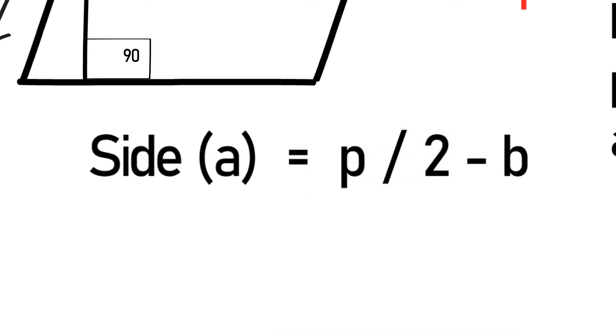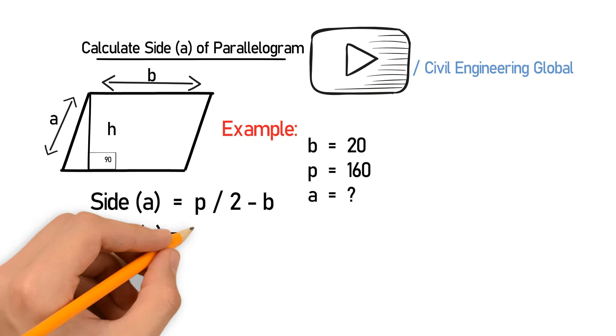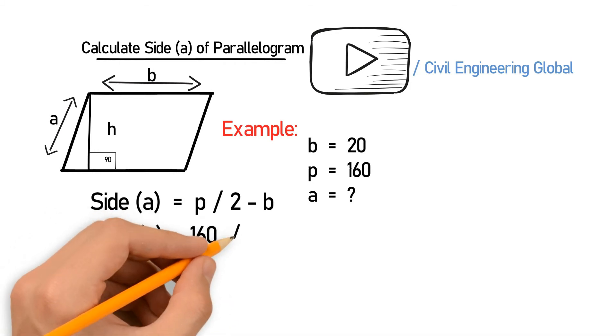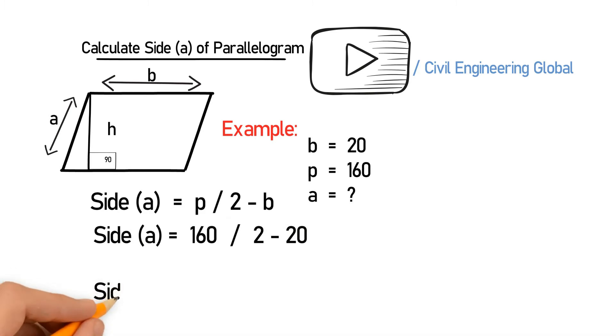So let's put in the values. Side A is equal to 160 divided by 2 minus 20. After calculating this, you will get side A is equal to 60 meters.